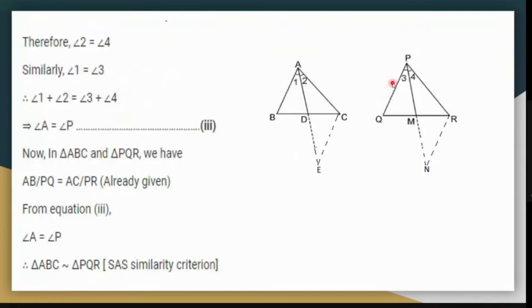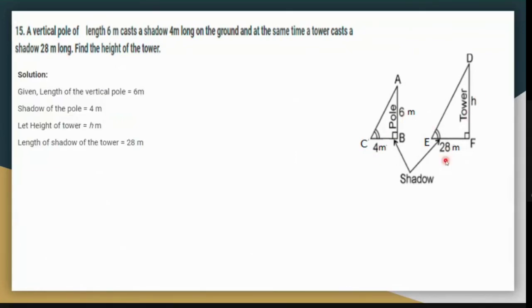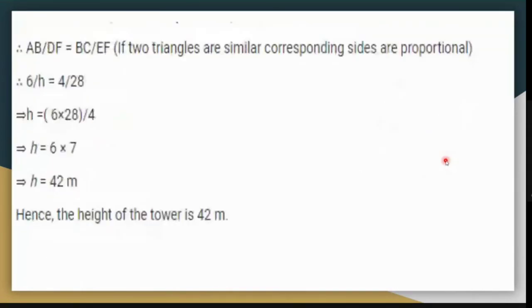Question 15: a vertical pole of length 6 meters casts a shadow 4 meters long. At the same time, a tower casts a shadow 28 meters long. Since the time is the same, the sun's elevation is the same, so angle C equals angle E. With the 90-degree angles, triangle ABC is similar to triangle DFE by the AA rule. The sides are proportional: 6 upon 4 equals H upon 28, giving the height of the tower as 42 meters.